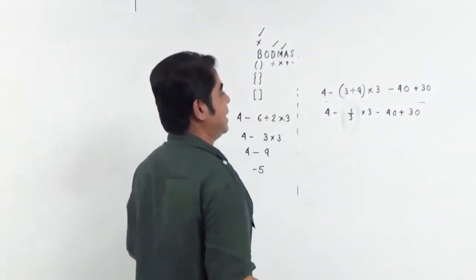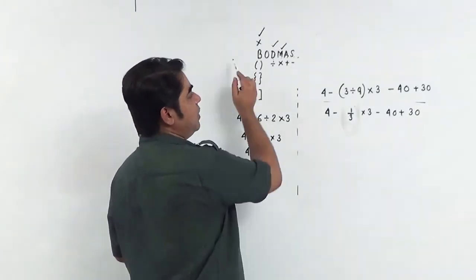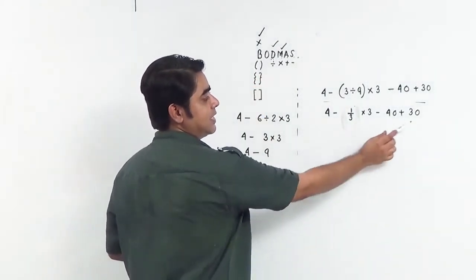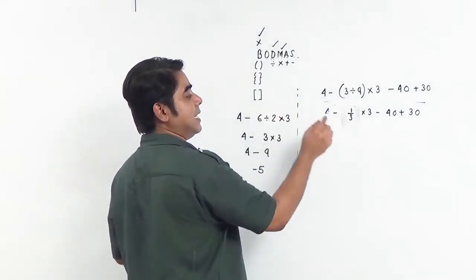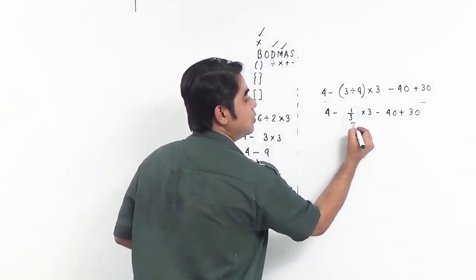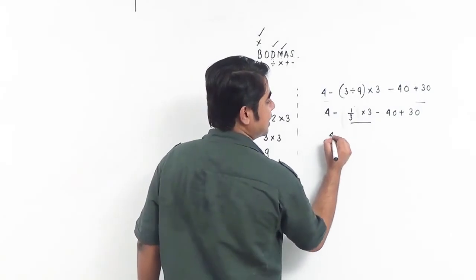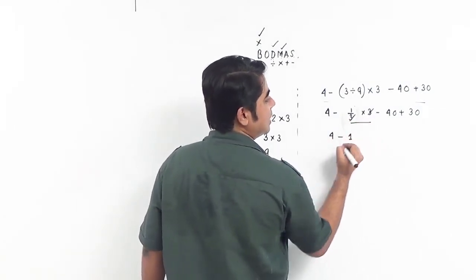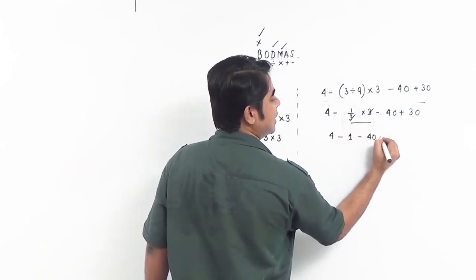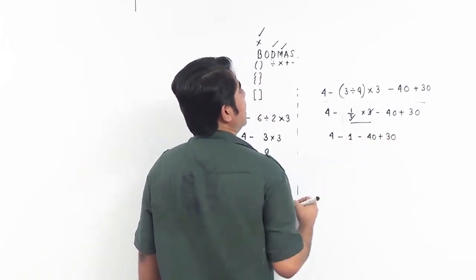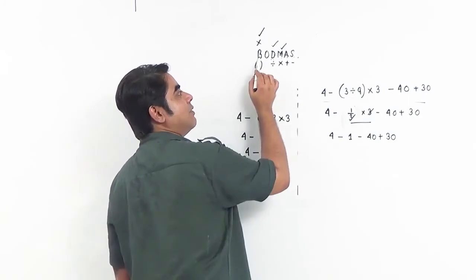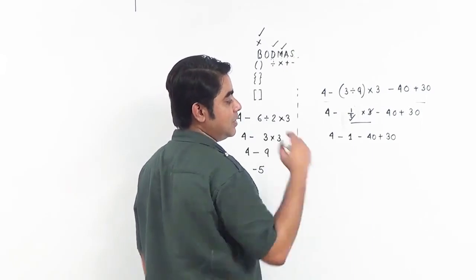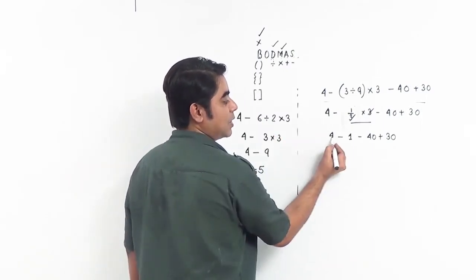Now after the bracket, let us scan it again. Bracket is done. Do we have a division? No division anywhere. Do we have a multiplication? Yes, we do. So we will do this multiplication first. 1 by 3 into 3 cancels out, giving us 1. This becomes 1 minus 40 plus 30. Scanning again: no bracket, no division, no multiplication. We do have additions, so we will do the additions first.